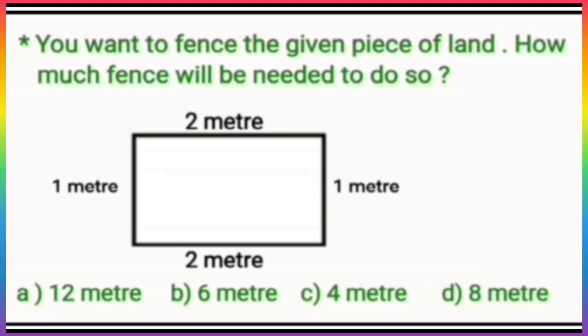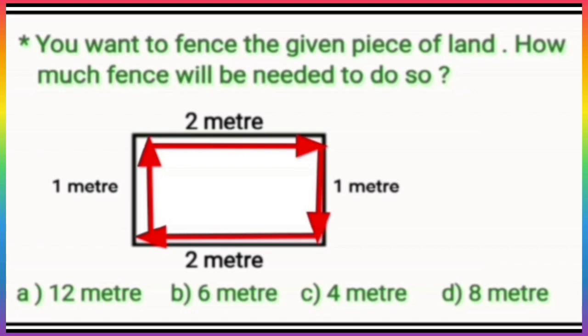So to find the length of wire to fence this piece of land, we'll need to find its perimeter. And to find the perimeter, we will add all its dimensions: 2 meters plus 1 meter plus 2 meters, then again plus 1 meter. It becomes 6 meters. So let's find the correct option.